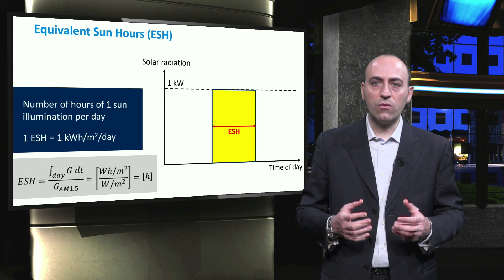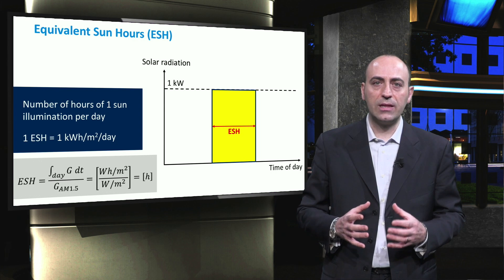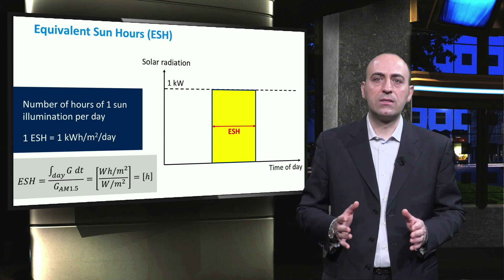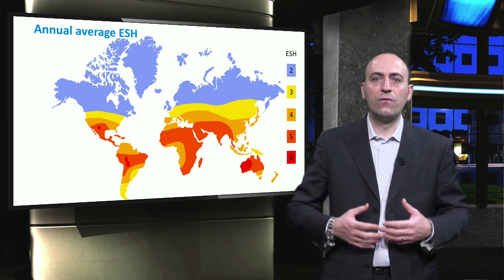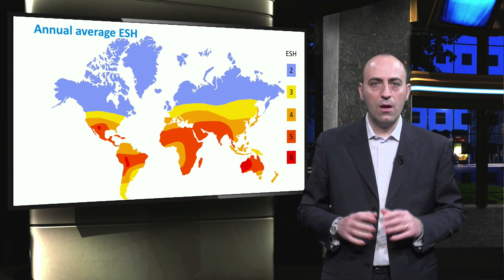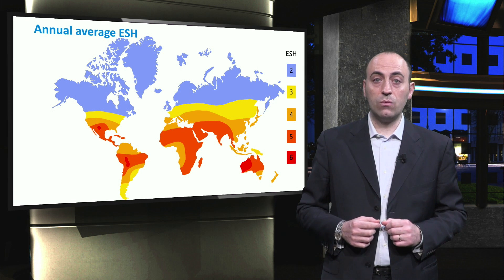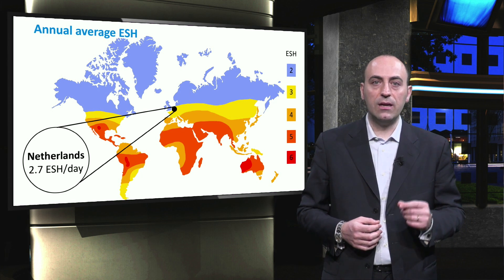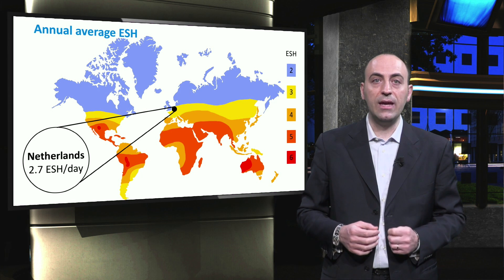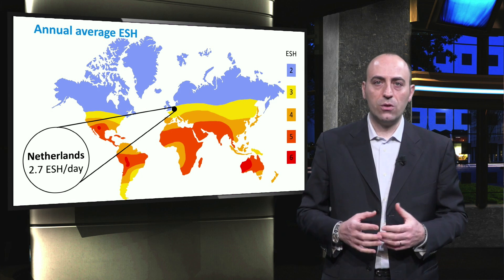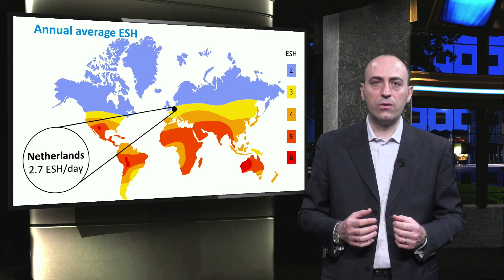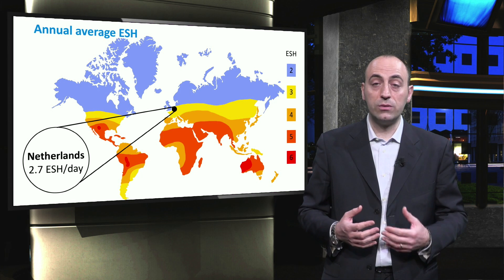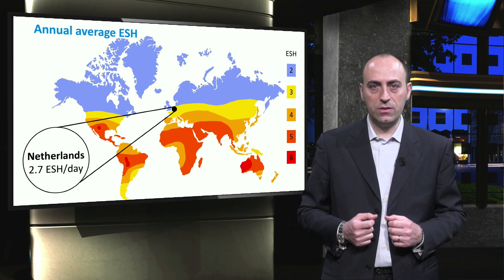The corresponding graph of the irradiance has this rectangular shape that covers the same area of the other one. In this last slide, the insolation in terms of annual average ESH is shown. Five regions can be distinguished and are highlighted with different colors. In the Netherlands, the annual average equivalent sun hours per day is 2.7. So, depending on the position on the Earth and the position of the sun in the sky, terrestrial solar radiation varies both in intensity and spectral distribution.